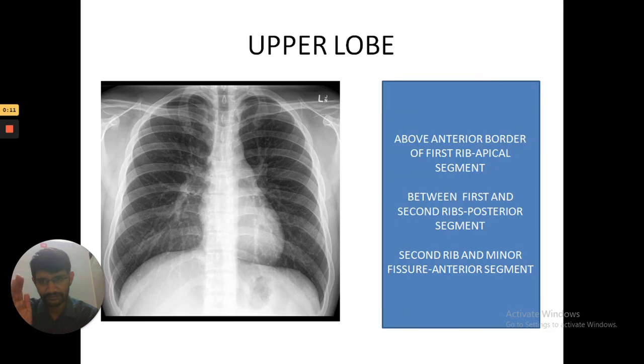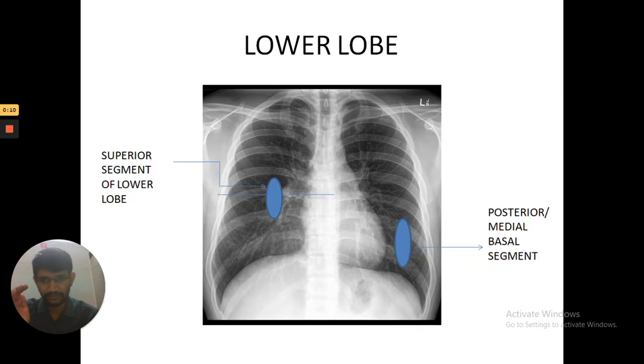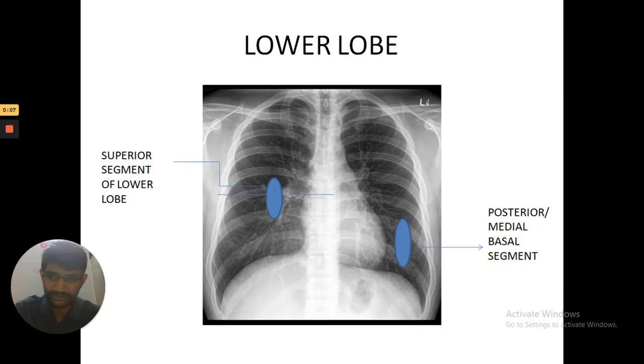To summarize: the silhouette sign, upper lobe segments, and lower lobe segments. If you have any comments, please mention them in the comment box. Please like, share, and subscribe. Thank you for your patience.